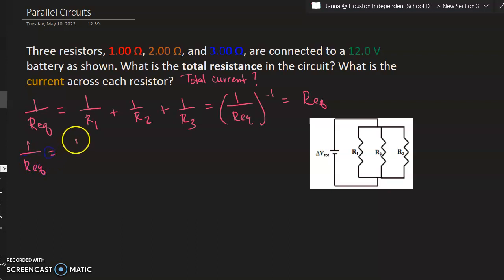1 over REQ is equal to 1 over 1 ohm, that's the value for R1, plus 1 over 2 ohms plus 1 over 3 ohms. If you know how to get a common denominator, this will be 11 over 6 ohms. This is not my resistance. This is 1 over the resistance. This is 1 over REQ. If I raise this now to the negative 1 power, it will give me a resistance. The resistance value REQ, total resistance, is equal to 6 over 11 ohms.